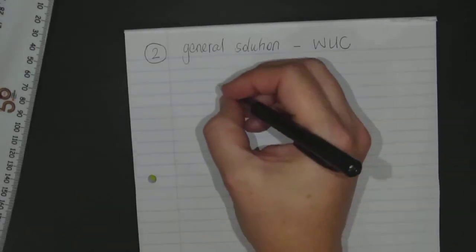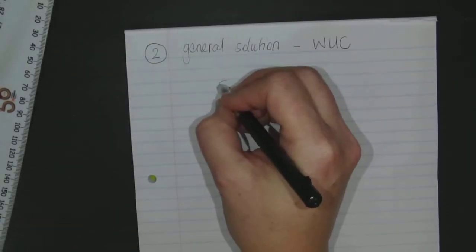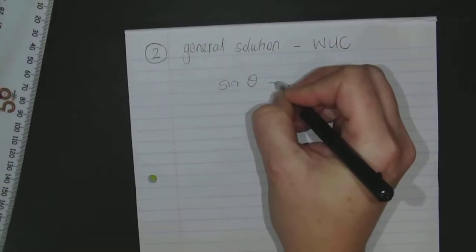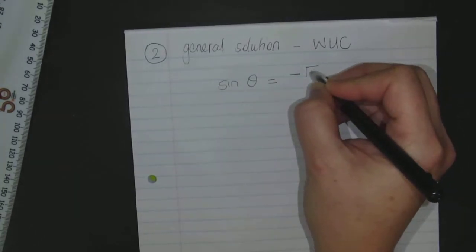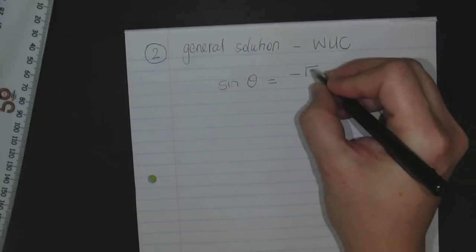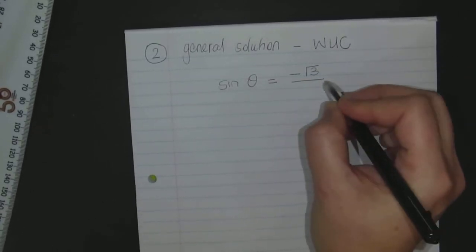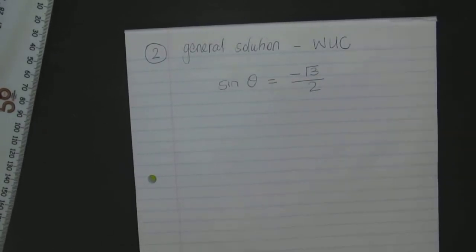So what if I change this a little bit? What if I say to you, sine theta is equal to minus square root 3 over 2.